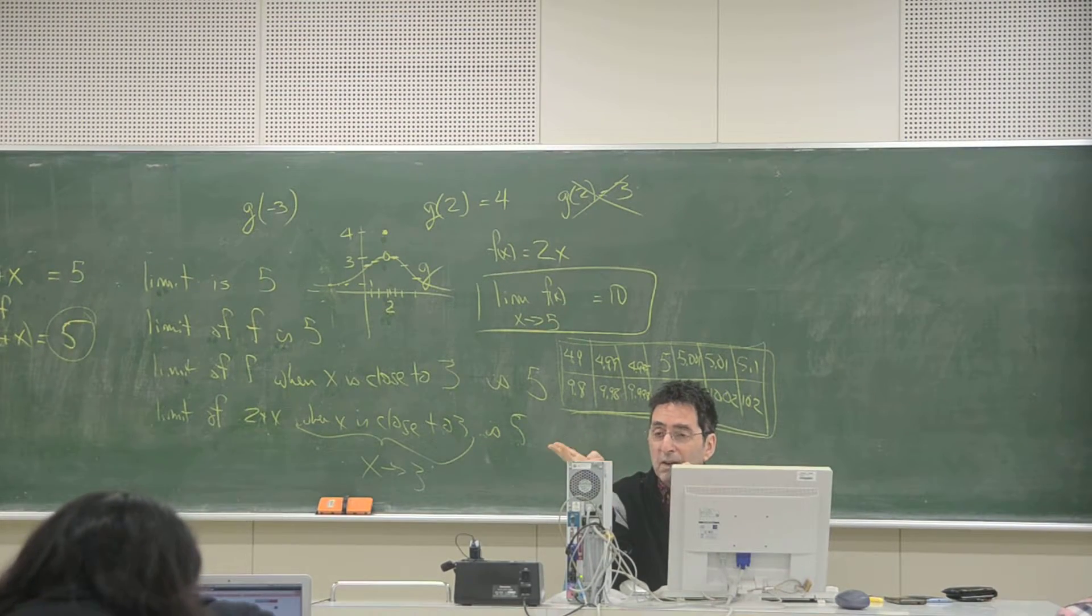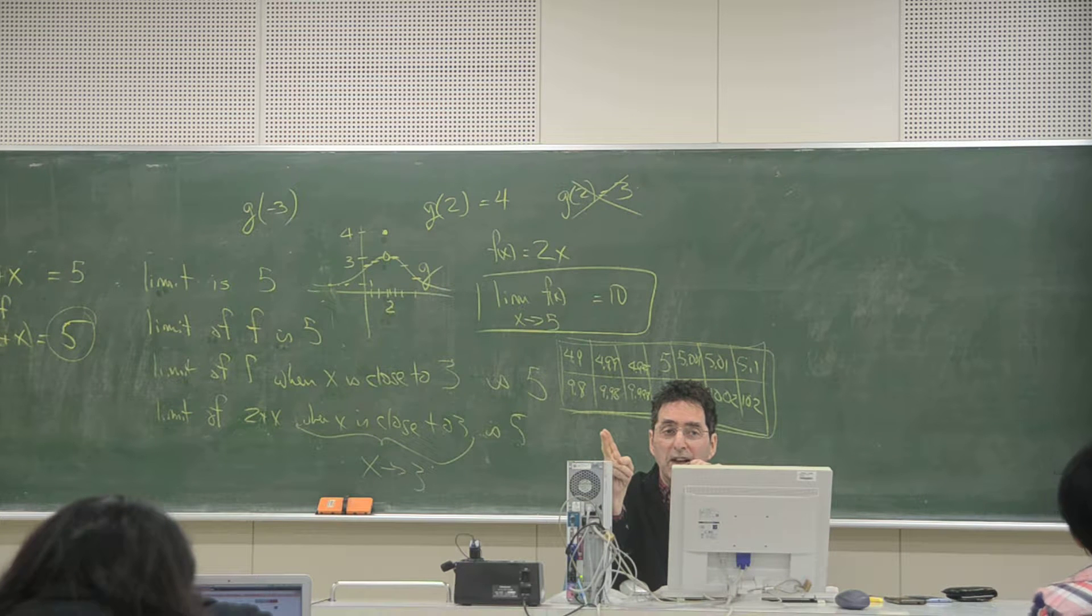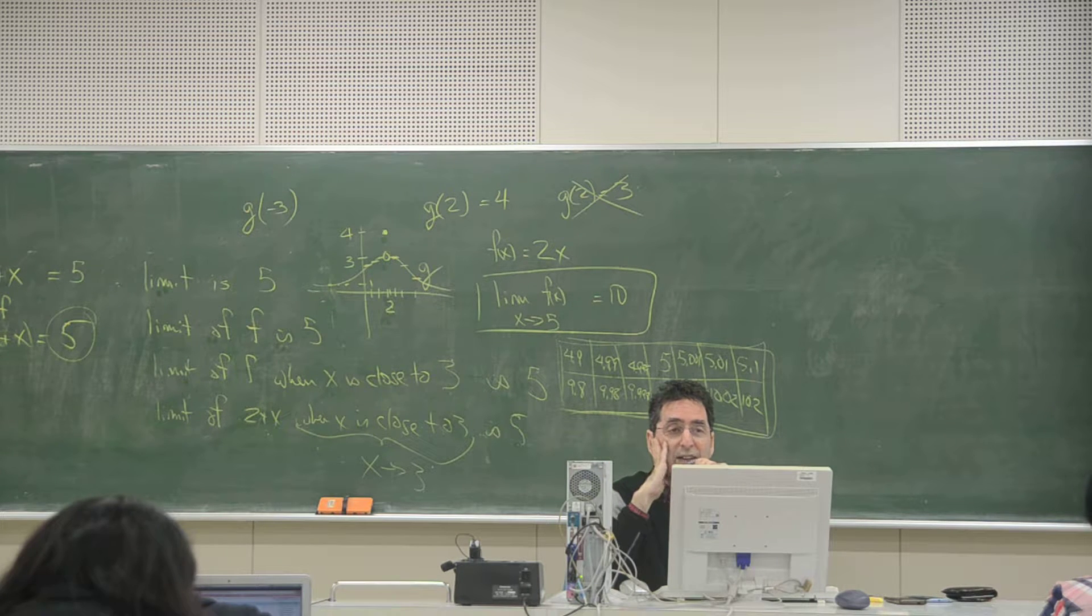So I got three yesterday, no, four yesterday, two today, no, four yesterday, three today. So now I'm thinking it happened enough already, it's not going to happen again now. Is that good thinking or bad thinking?